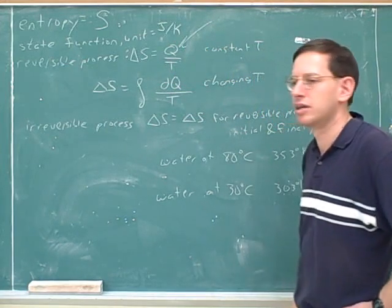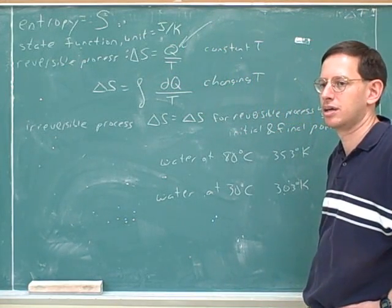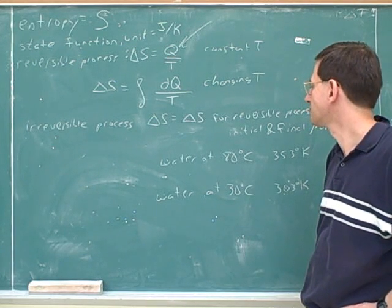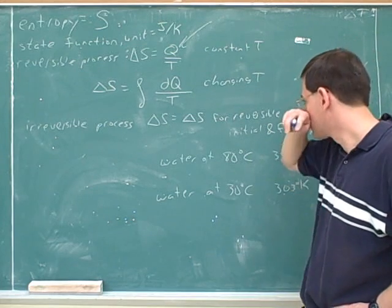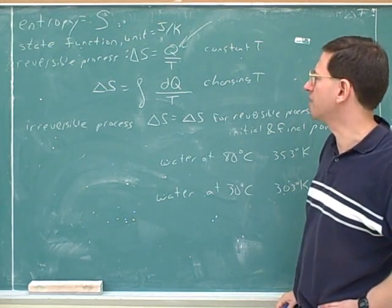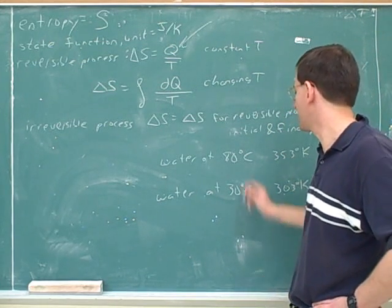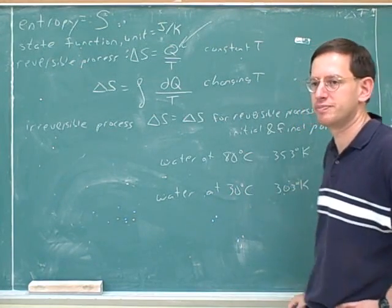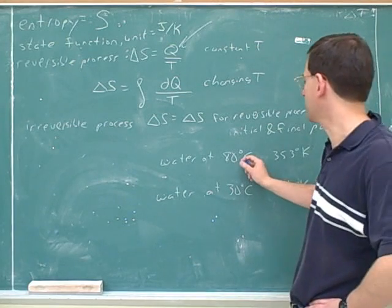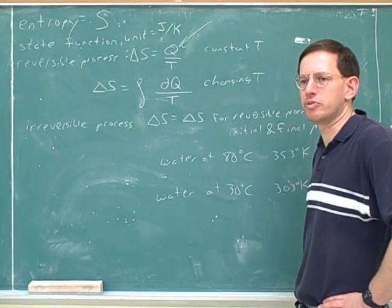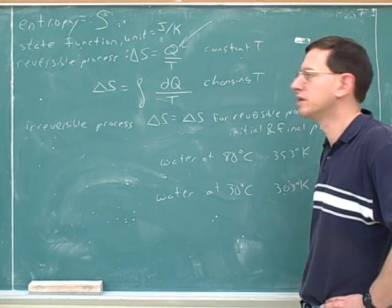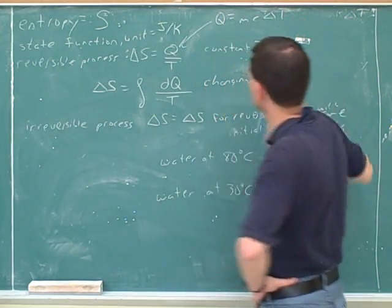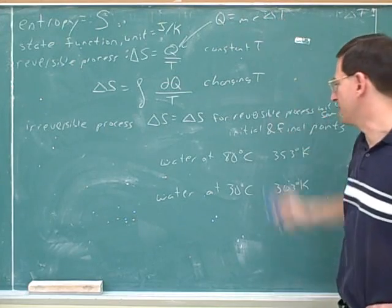How would we figure out Q? Suppose we're trying to figure out just the entropy change for one body of water, and then we'll figure out the entropy change for the other, and then we can put them together. The formula applicable there is Q = mcΔT. So we have to know what the change in temperature is going to be.